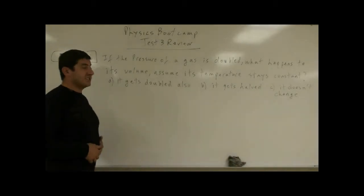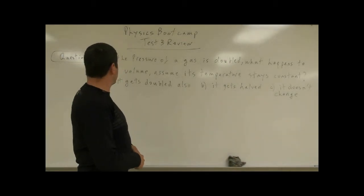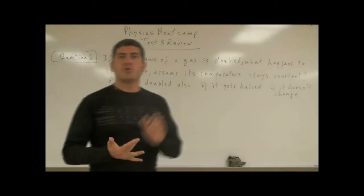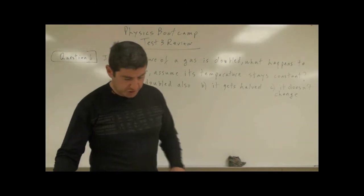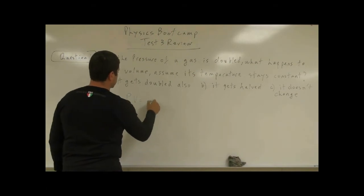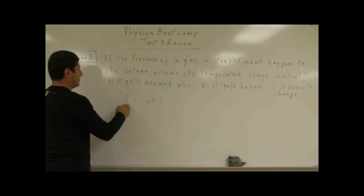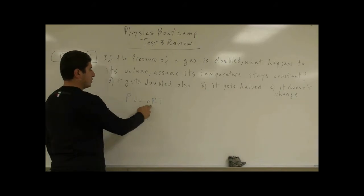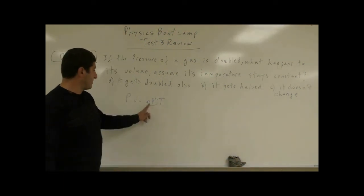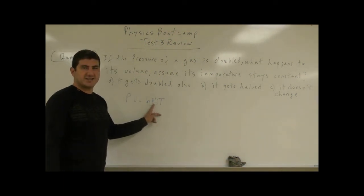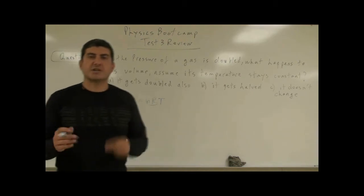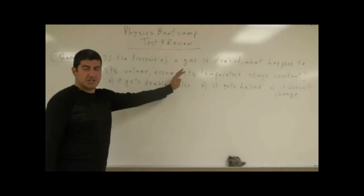If the pressure of a gas is doubled, what happens to its volume assuming its temperature stays constant? For these kinds of questions, you have to use the ideal gas law: PV equals nRT. The product of pressure and volume is proportional to temperature, and the proportionality constant is the number of moles times the universal gas constant. We don't really need nR in this case because the number of moles is not changing.